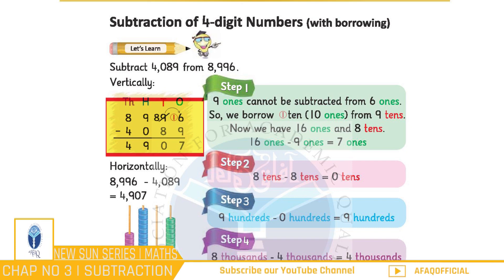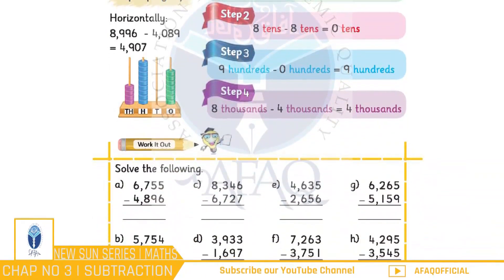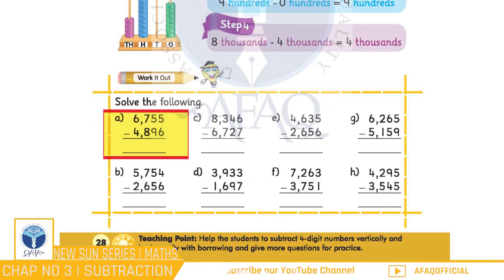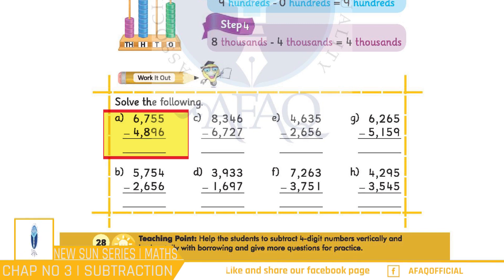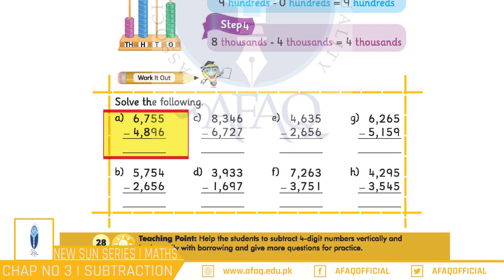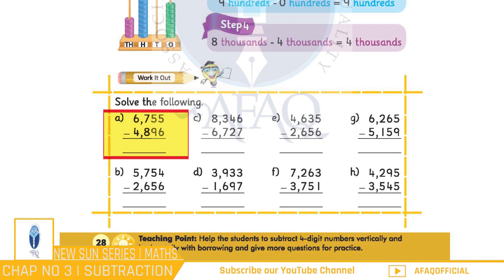Bacchiyon, is baat ko mazeed samajhne ke liye hum yahan diya gaya pehla question milkar solve karenge jismein aap dekh sakte hain ki 6,755 mein se 4,896 ko subtract kiya jaana hai. Jiske liye hum sabse pehle 1s place par maujood values subtract karenge, yani 5 minus 6. Bacchiyon, kyunki 5, 6 se chhota hai, hum 6 ko 5 mein se subtract nahin kar sakte. Jiske liye hum 5 tens mein se 1 ten, 5 ones ko borrow karwayenge, to ye 5 ones, 15 ones mein tabdeel ho jayenge aur 10s place par 4 tens reh jayenge.